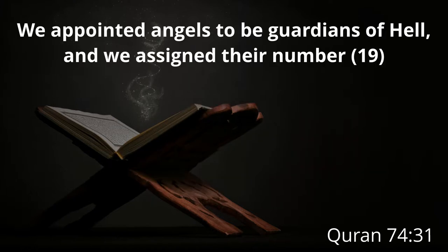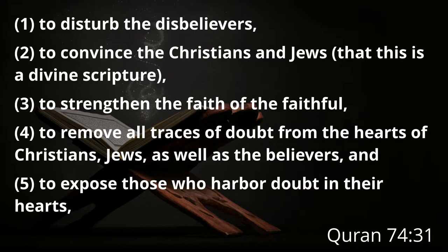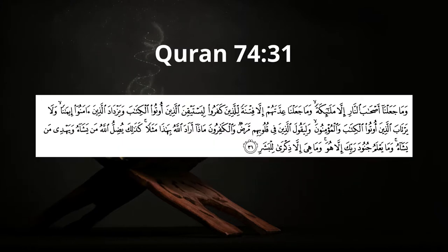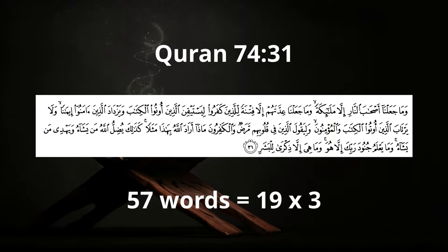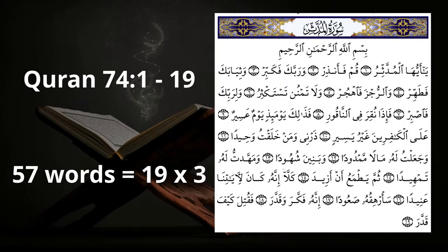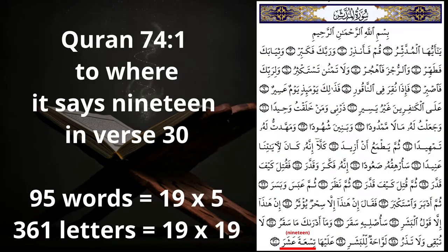Let's break down 74:31 further. If you count the number of words in Arabic in that verse you get 57, which is 19 times 3. The first 19 verses of Surah 74 also contain 57 words — 19 times 3. The number of words from the beginning of Surah 74 to exactly where it mentions the number 19 is 95 words — 19 times 5. And the number of letters from the beginning of Surah 74 to the word '19' in verse 74:30 is 361, which is 19 times 19.